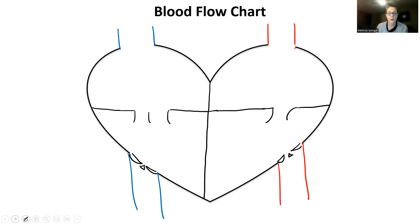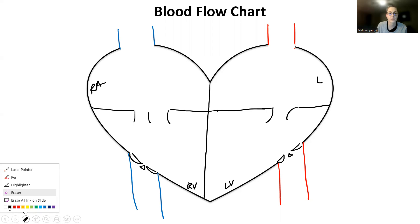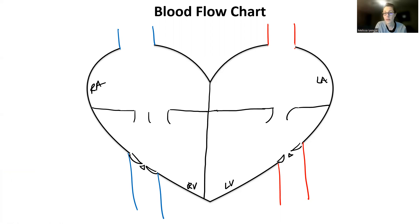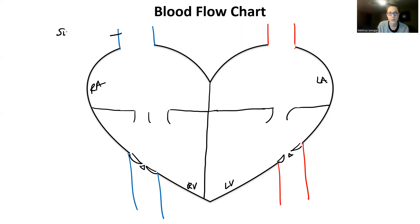Start labeling everything. This is our left ventricle, this is our right ventricle, over here is the right atrium, and this is the left atrium. On a test, my expectation is that you do not use abbreviations — write everything out. I need to know that you understand what LA and RA mean. Then you can label everything else. These are a set of veins that all attach to the right atrium: superior vena cava, inferior vena cava, and the coronary sinus.